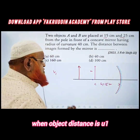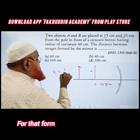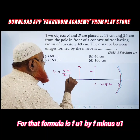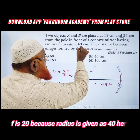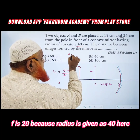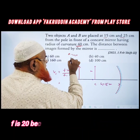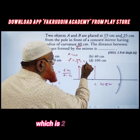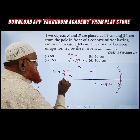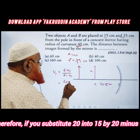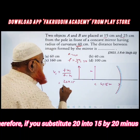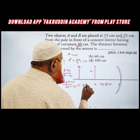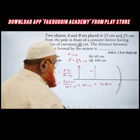First, find the image distance v1 when the object distance is u1. The formula is v1 = f·u1 / (f - u1). Since the radius is given as 40, f = 40/2 = 20 centimeters. Substituting: v1 = 20×15 / (20 - 15) = 60 centimeters.